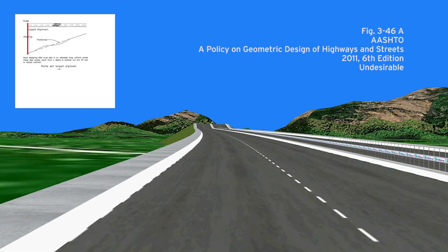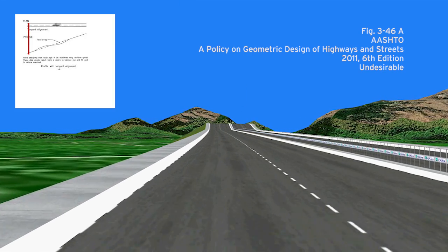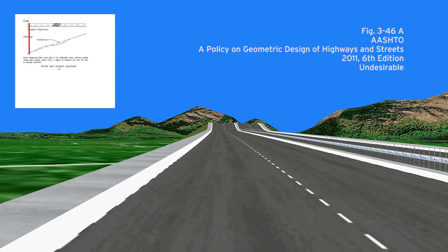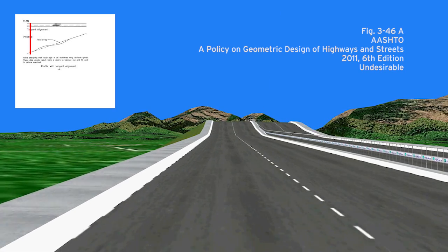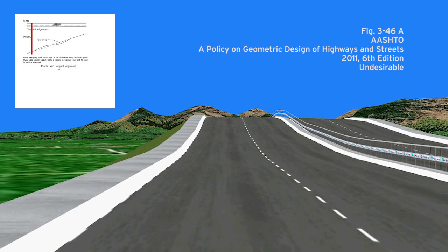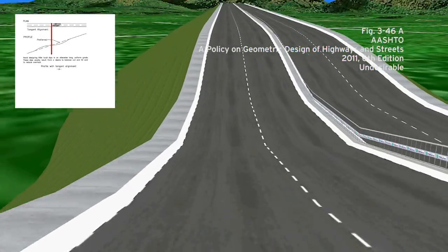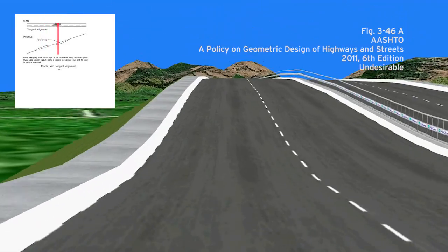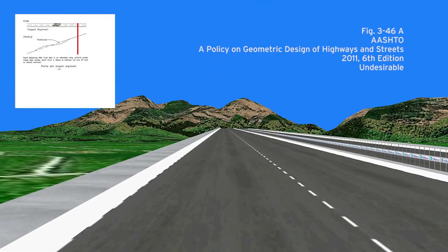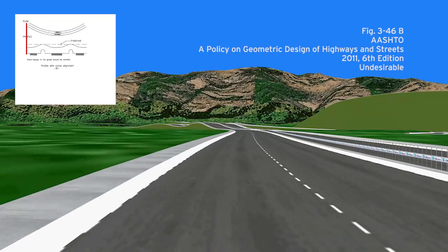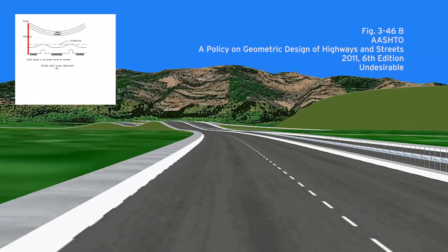Figure A shows local dips and crests in an otherwise constant grade. It is best to just use a constant grade. Figure B shows small bumps in the grade, which should be avoided.